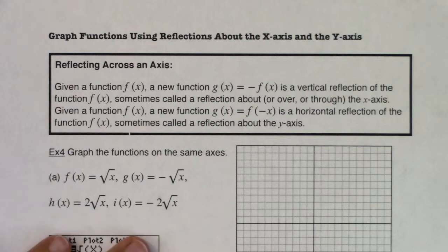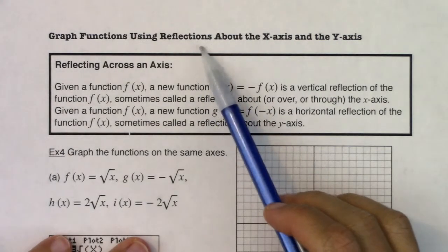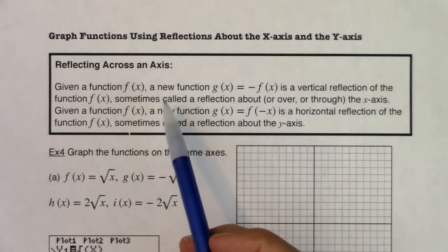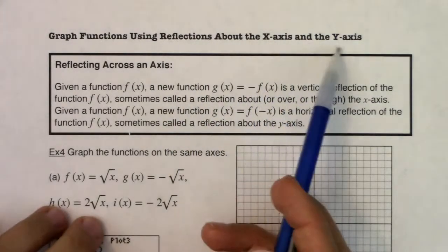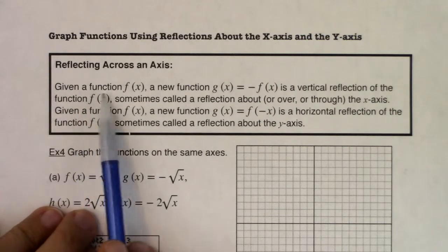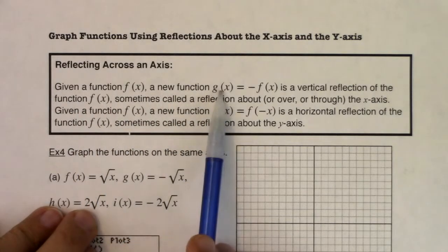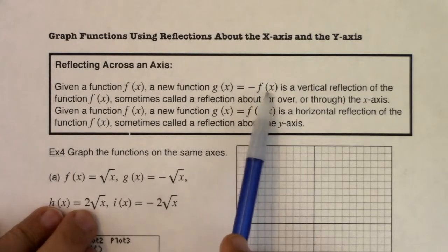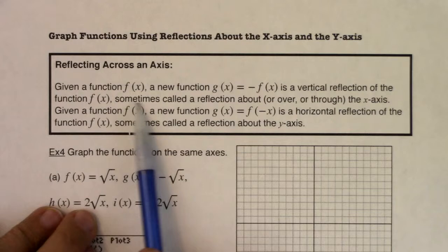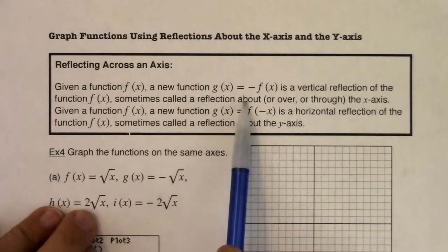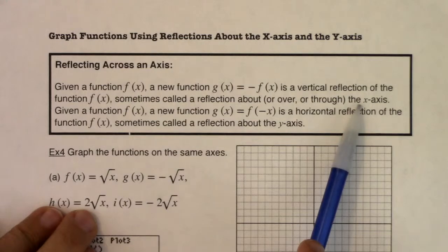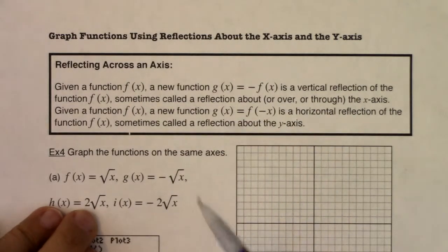Hey MAT31, let's take a look at graphing functions using reflections about the x and y axis. There are two axes I can reflect around, either the x or the y, and here are the rules that govern them. Given a function f, a new function g which is negative f is a vertical reflection of f, sometimes called a reflection about or over or through the x axis — we're reflecting vertically over the x axis.